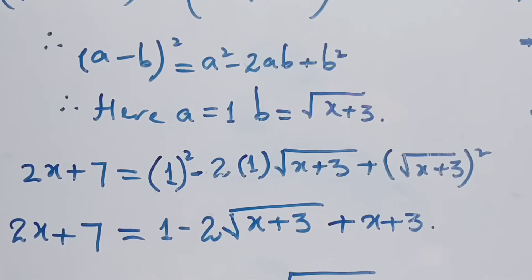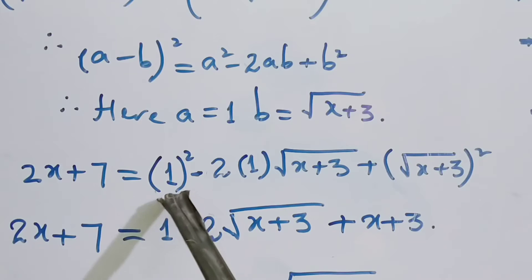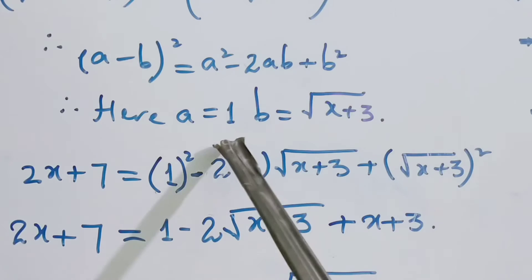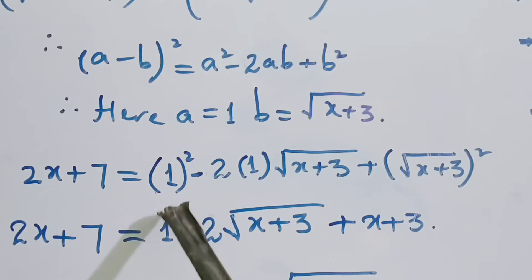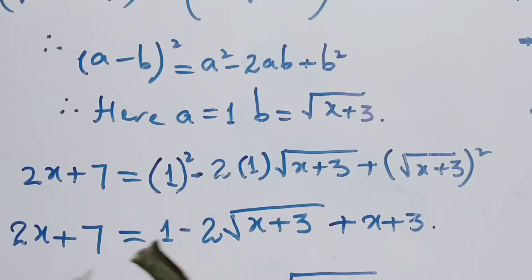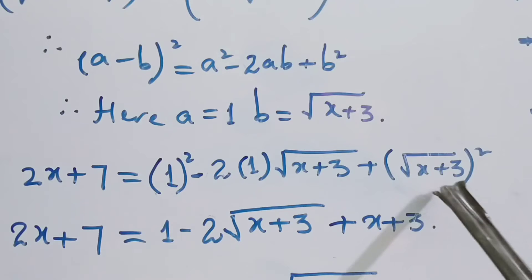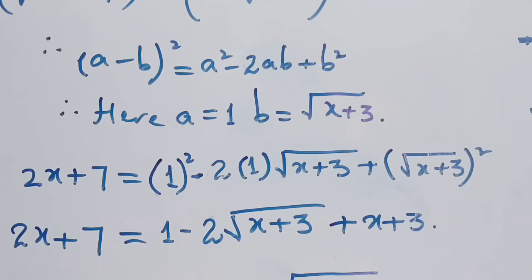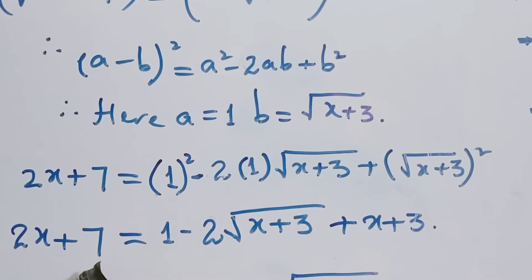Applying the (a − b)² formula: 2x + 7 equals 1² minus 2 × 1 × root of (x + 3) plus root of (x + 3) whole square. Simplifying: 2x + 7 equals 1 minus 2 root of (x + 3) plus (x + 3). Bringing like terms together: (x + 3 + 1) shifts so 2x minus x and 7 minus 4 equals minus 2 times root of (x + 3).